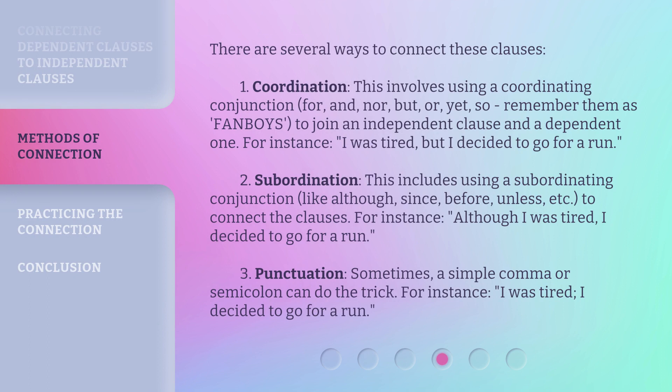There are several ways to connect these clauses. 1. Coordination: This involves using a coordinating conjunction — for, and, nor, but, or, yet, so — remember them as FANBOYS — to join an independent clause and a dependent one. For instance: 'I was tired, but I decided to go for a run.'